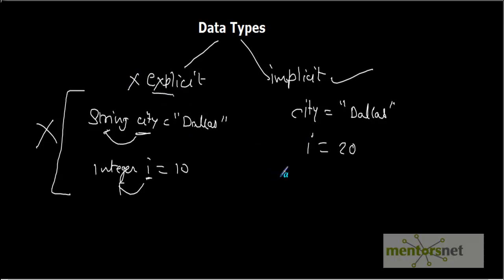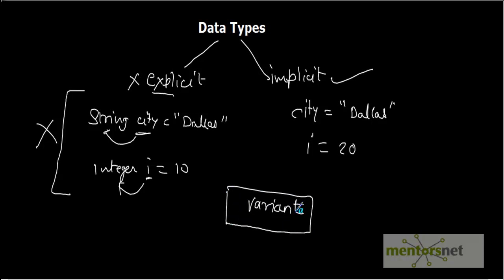In VBScript there is only one data type, called a variant. The variant type can hold any type of data, and based on the usage of the data it considers data subtypes. For example, city equals to Dallas means city is a string type, and i equals to 20 means i is of type integer.